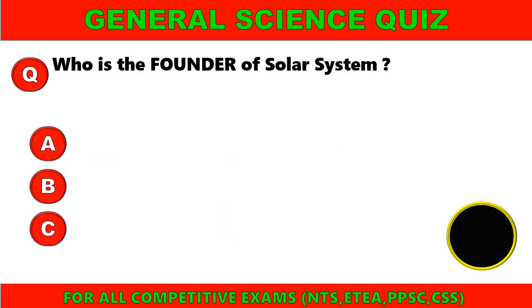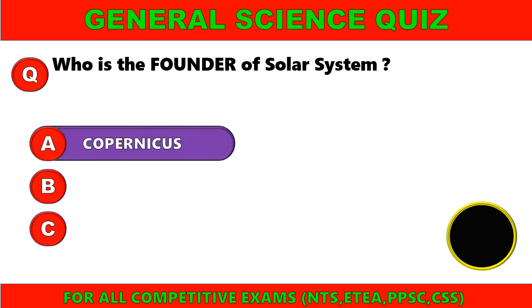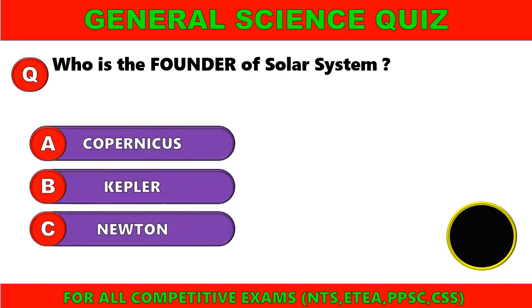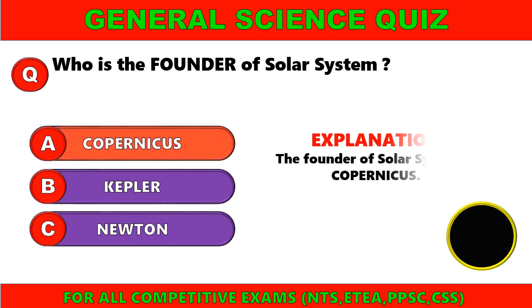Who is the founder of the solar system? A. Copernicus, B. Kepler, C. Newton. The right option is A. Copernicus. The founder of the solar system is Copernicus.